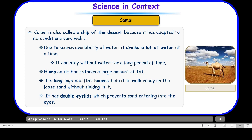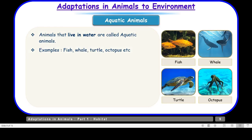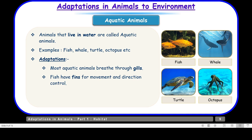Now let us move on to aquatic animals. Aqua means water, so animals that live in water are called aquatic animals. Animals like fish, whale, turtle, and octopus are found in water. Most aquatic animals breathe through gills. Fish have fins for movement and direction control. Whales and turtles have paddle-like flippers for movement, and octopus has tentacle-like structures that help them move.